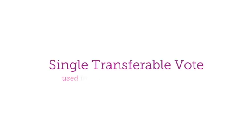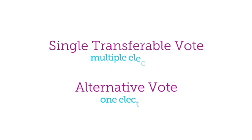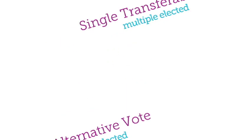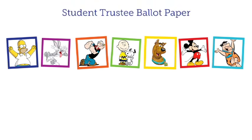Single transferable voting is being used to elect the student trustees. It's the fairest and most effective system to elect multiple candidates. So let's give a hypothetical example.